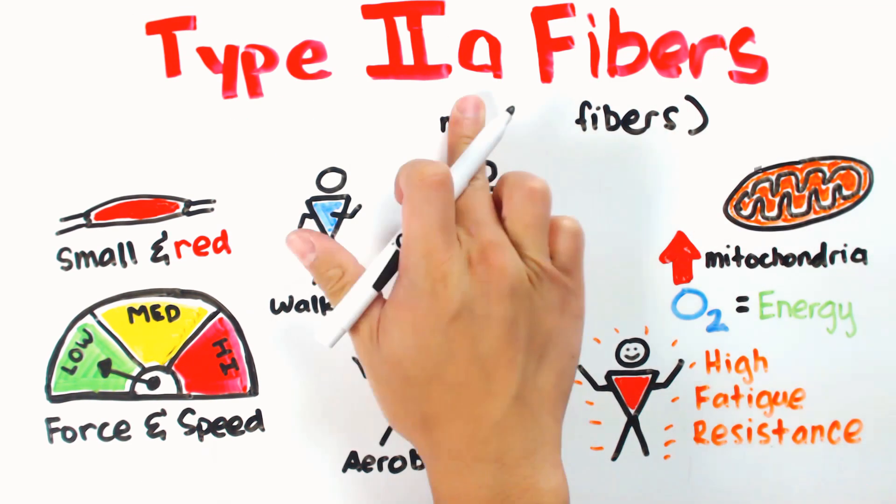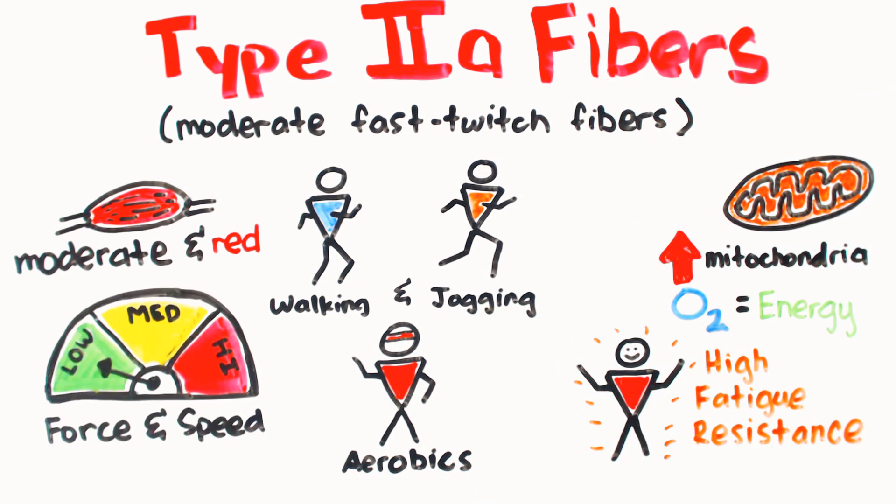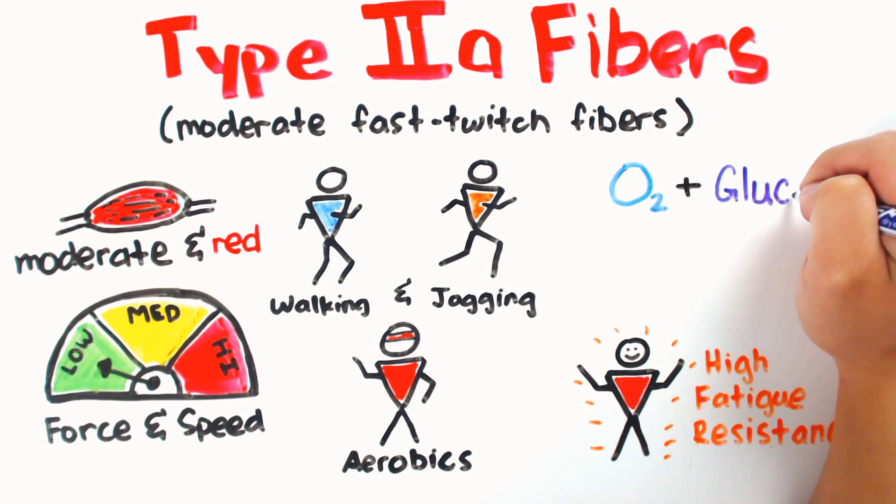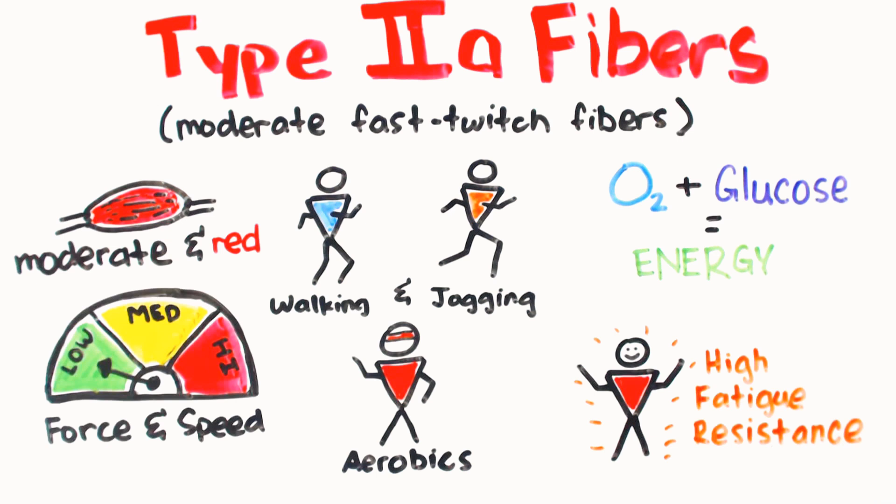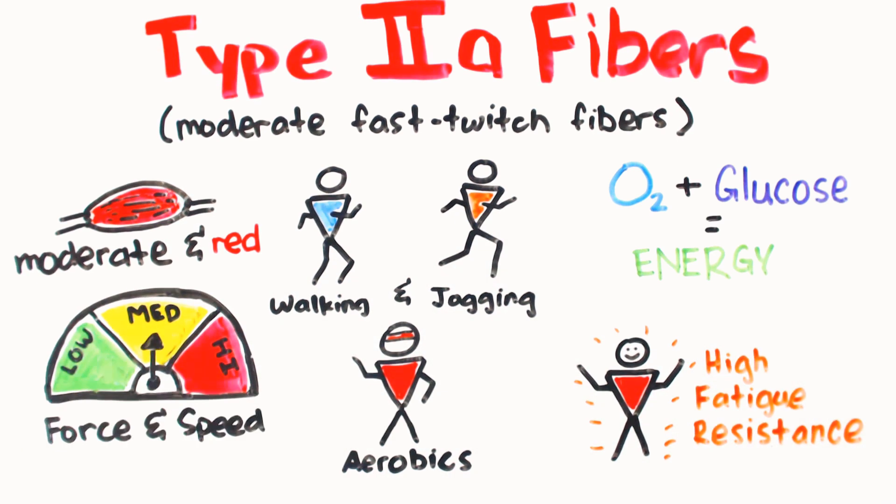Type 2a fibers, aka moderate fast twitch fibers, are also red but intermediate in size. These larger fibers typically use a combination of oxygen and glucose as a source of energy. This combination allows for quicker contracting speed and higher force output compared to Type 1 fibers, however, fatigue resistance isn't as high.